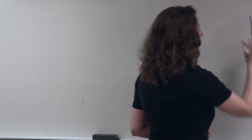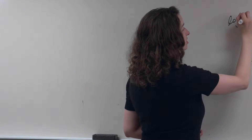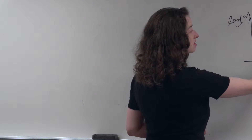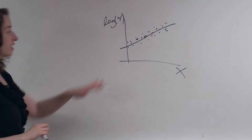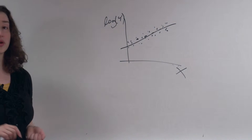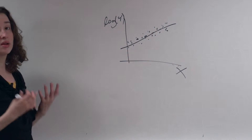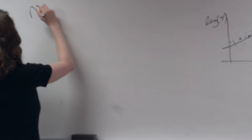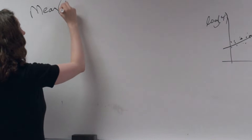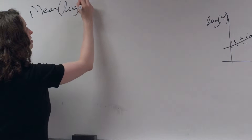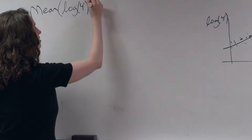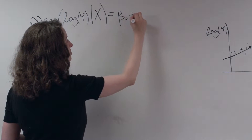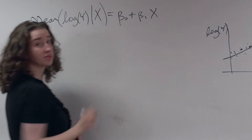The idea is that we have our x values, we took the log of y, and after doing that, we felt that we had data that was appropriate for a simple linear regression. What model are we assuming if we approximate this line? We're saying that the mean of the log of y, given x, is equal to some intercept plus some slope times x.